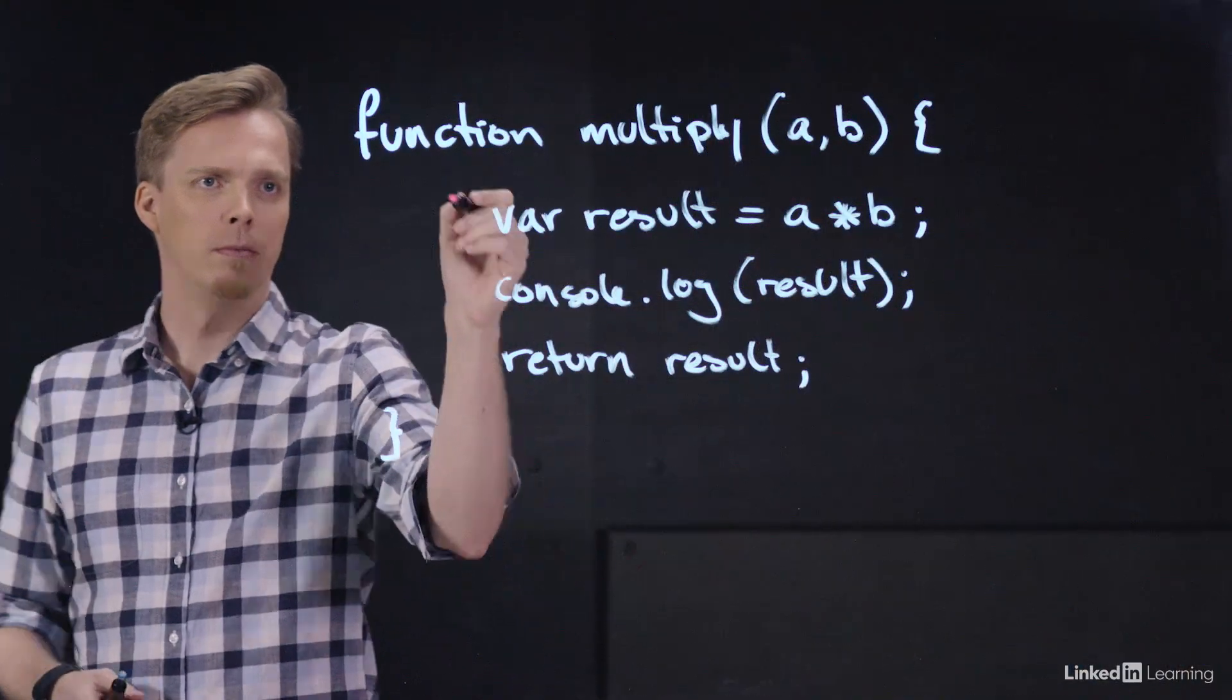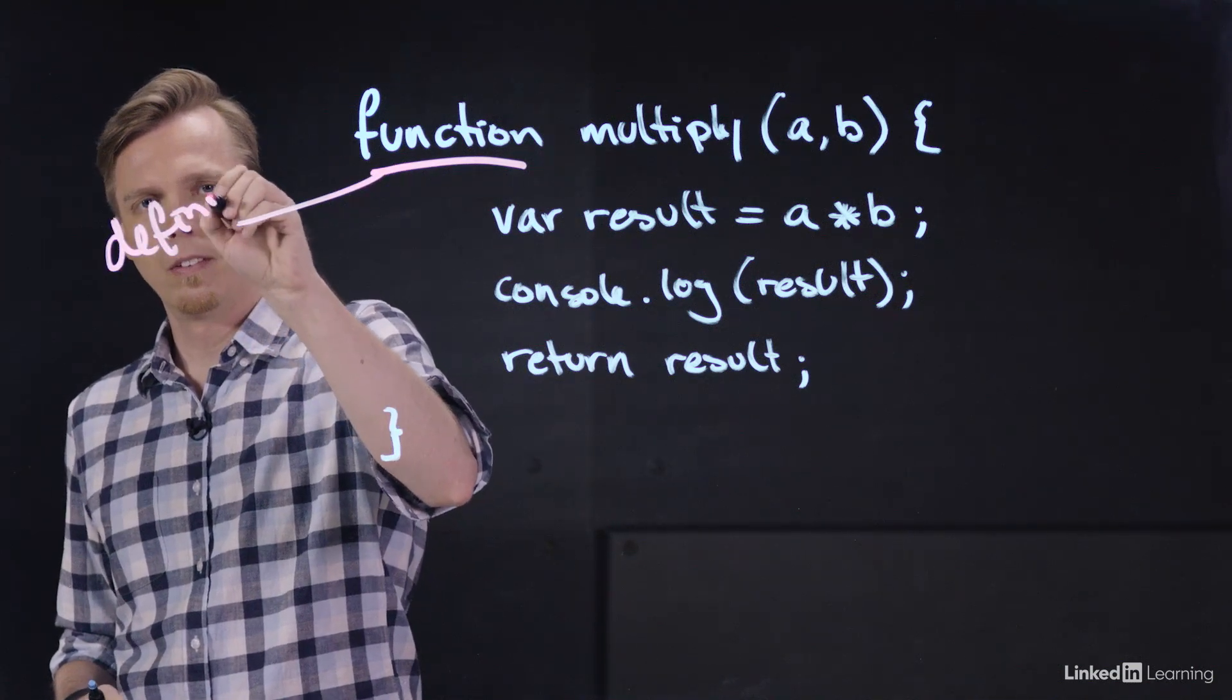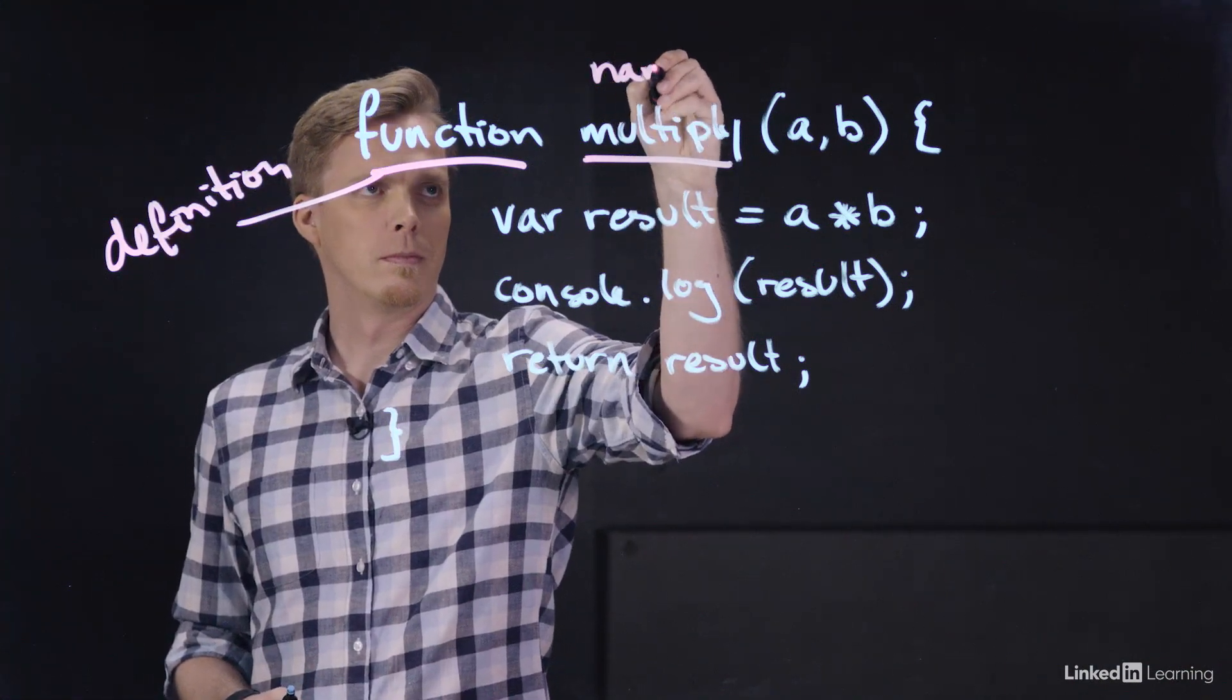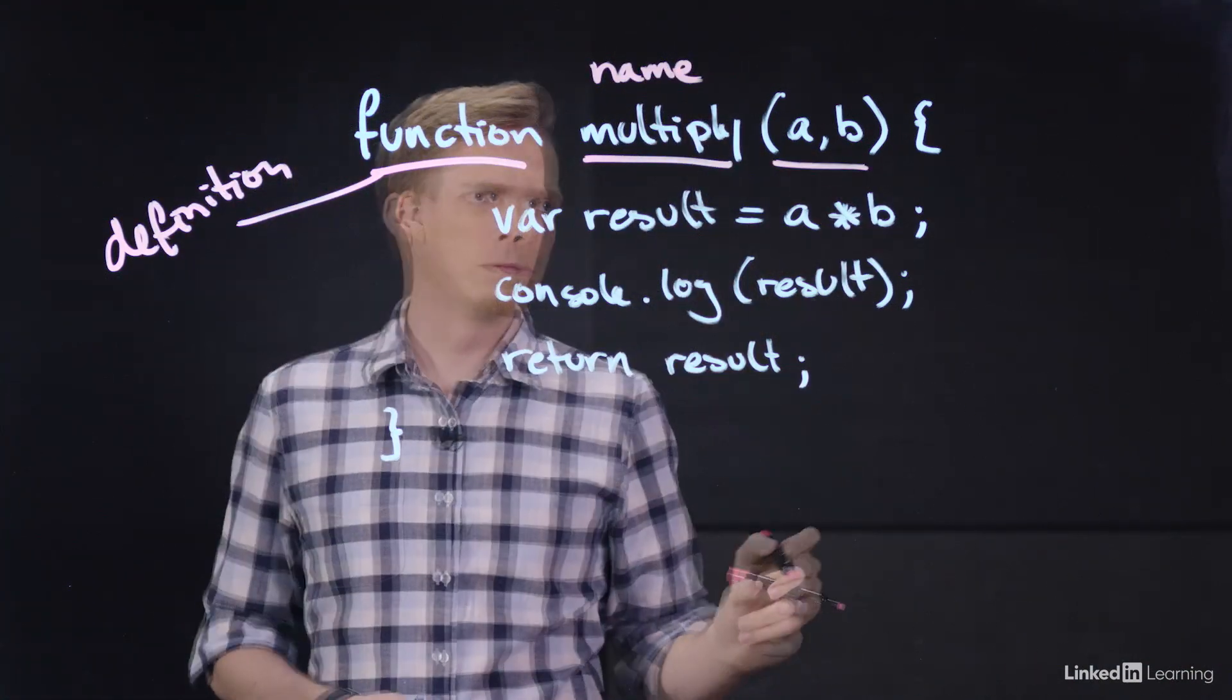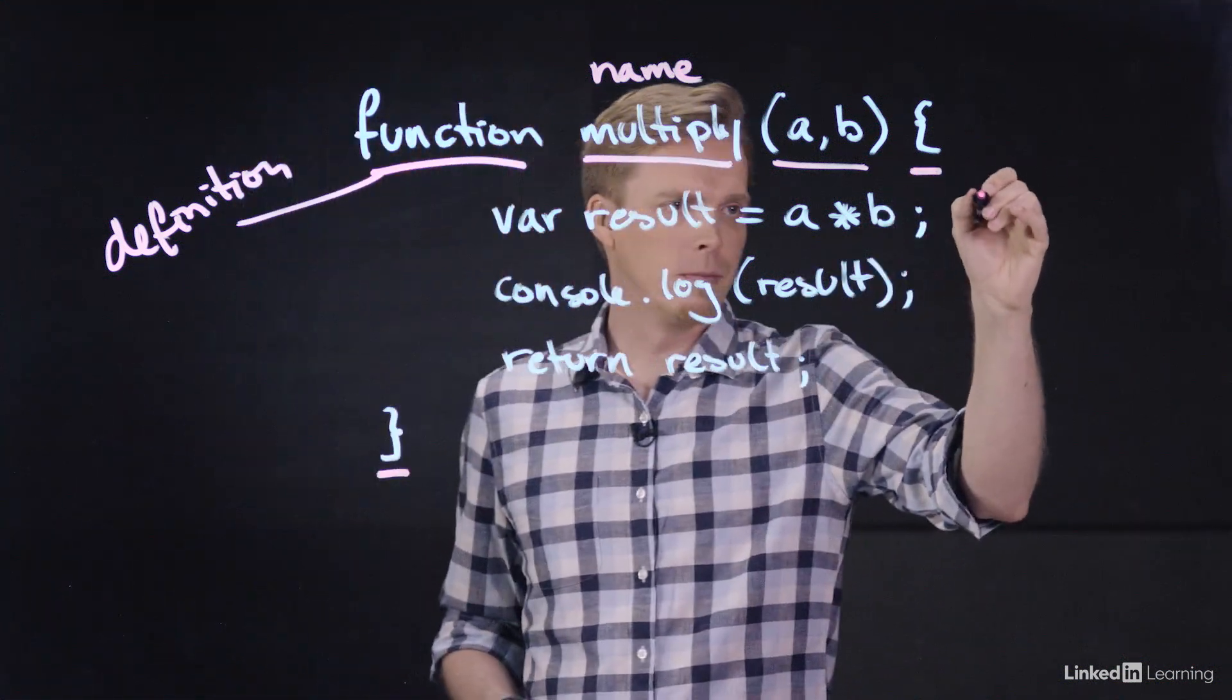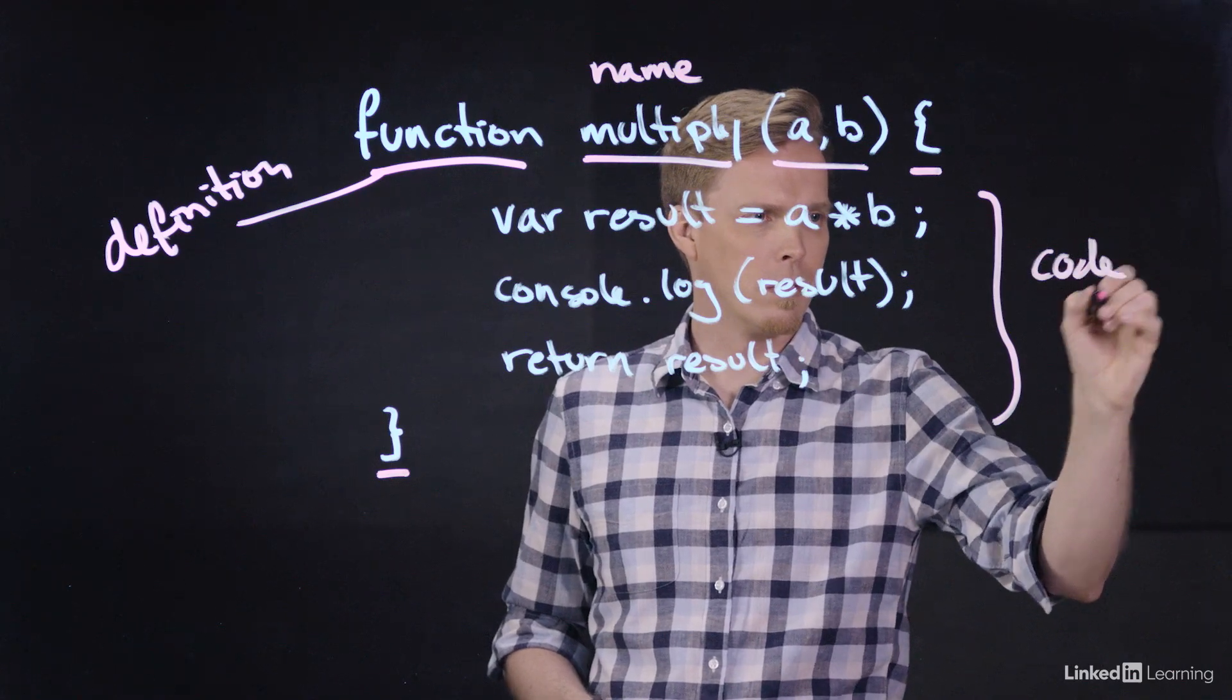All functions have the same overall structure. They start with the word function, which tells the browser, here I am declaring a function, followed by their name, two parentheses, and then a pair of curly brackets which wrap around the code block. To run a named function we call it by its name at the location in the script where we want it to run.